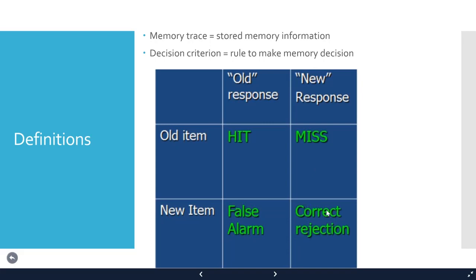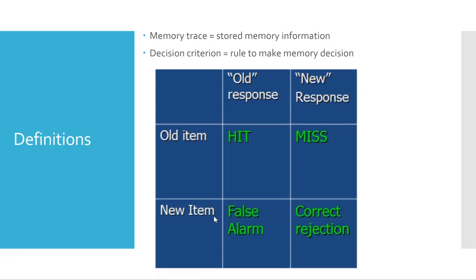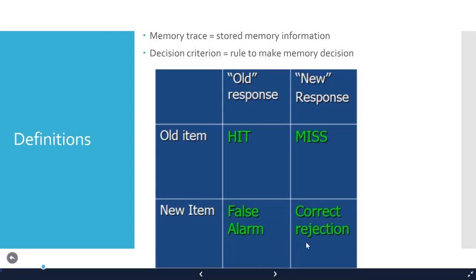If you have new items and call them new, that's a correct response — called a correct rejection. We're rejecting the item as being old, so it's a correct rejection. If you have a new item and call it old, that's a false alarm — accidentally saying a new item is old. This is also often referred to as a false memory, though not all false alarms are necessarily false memories; it could just be a simple error.